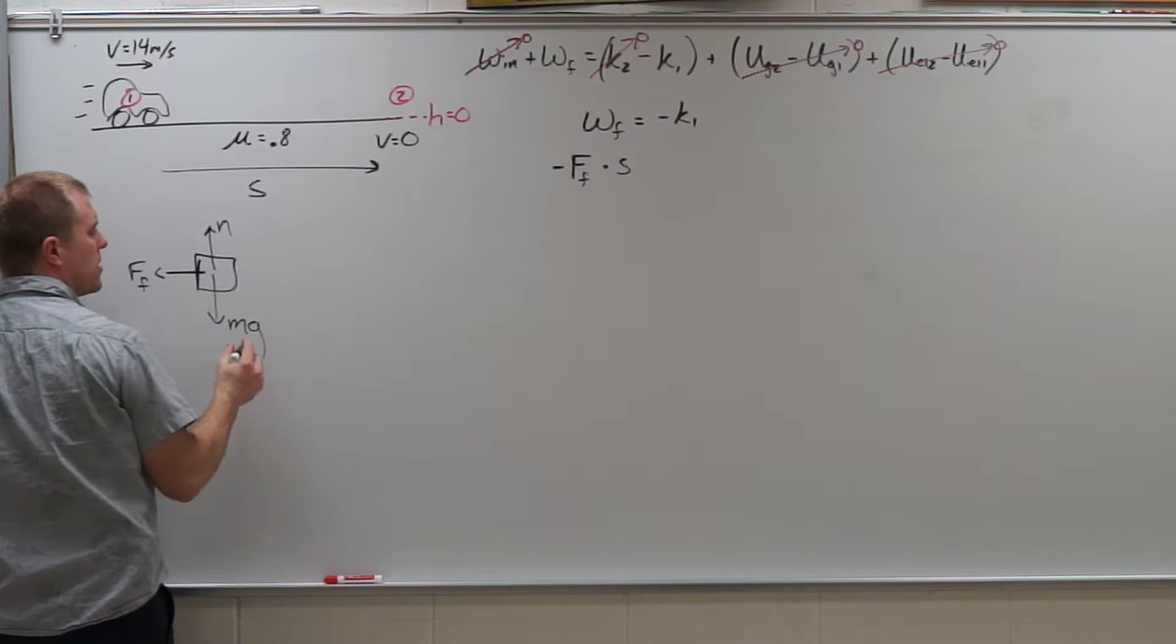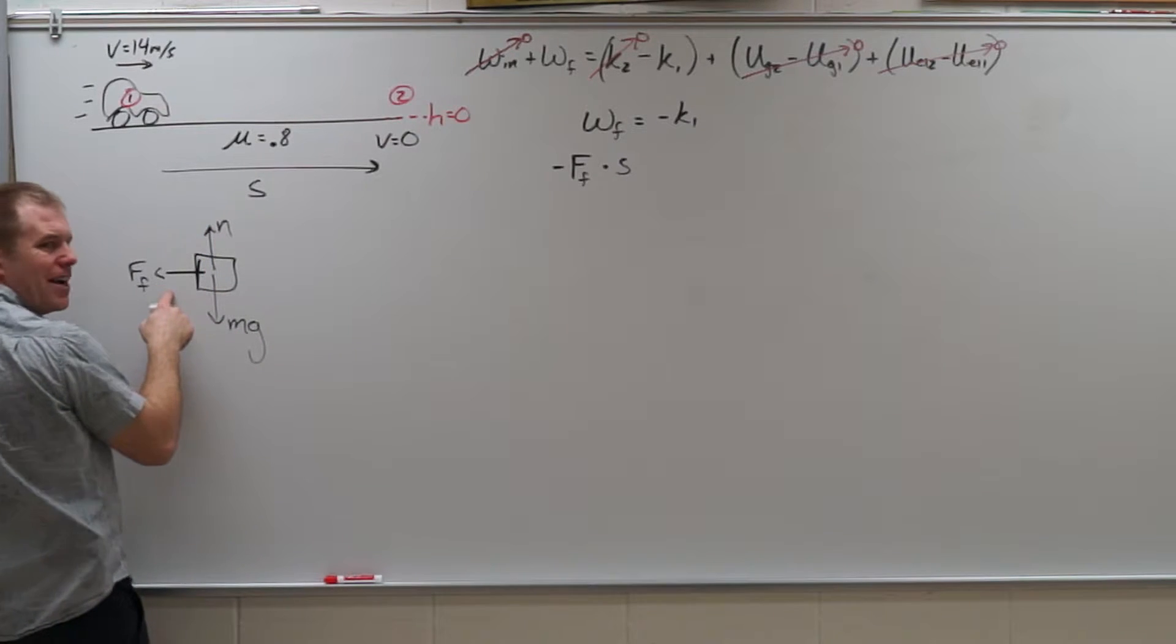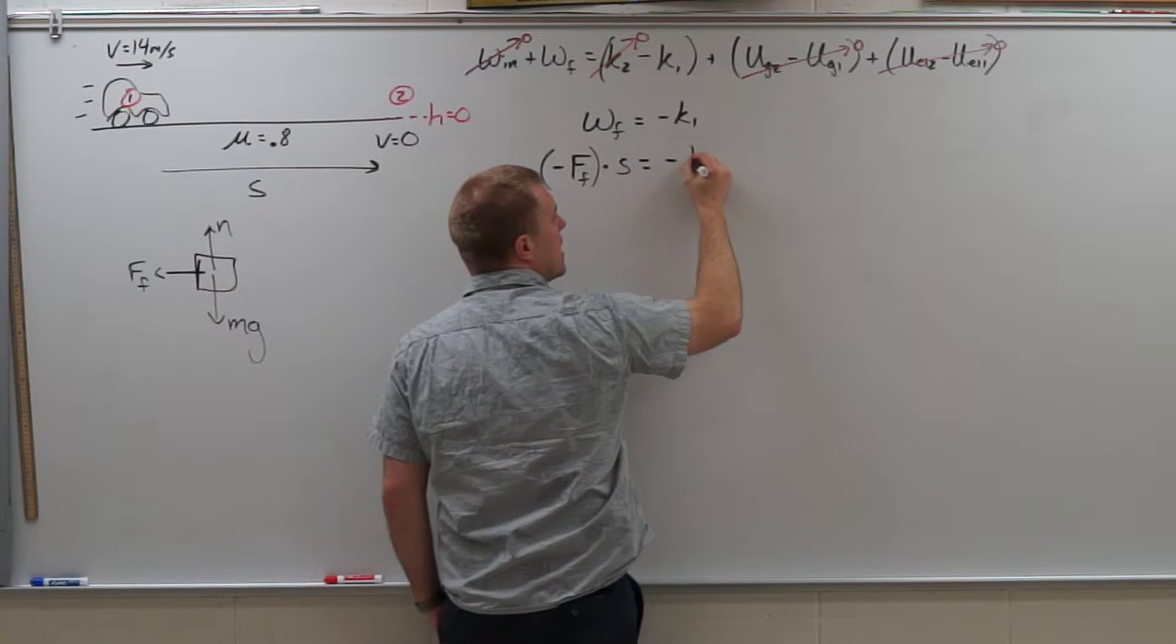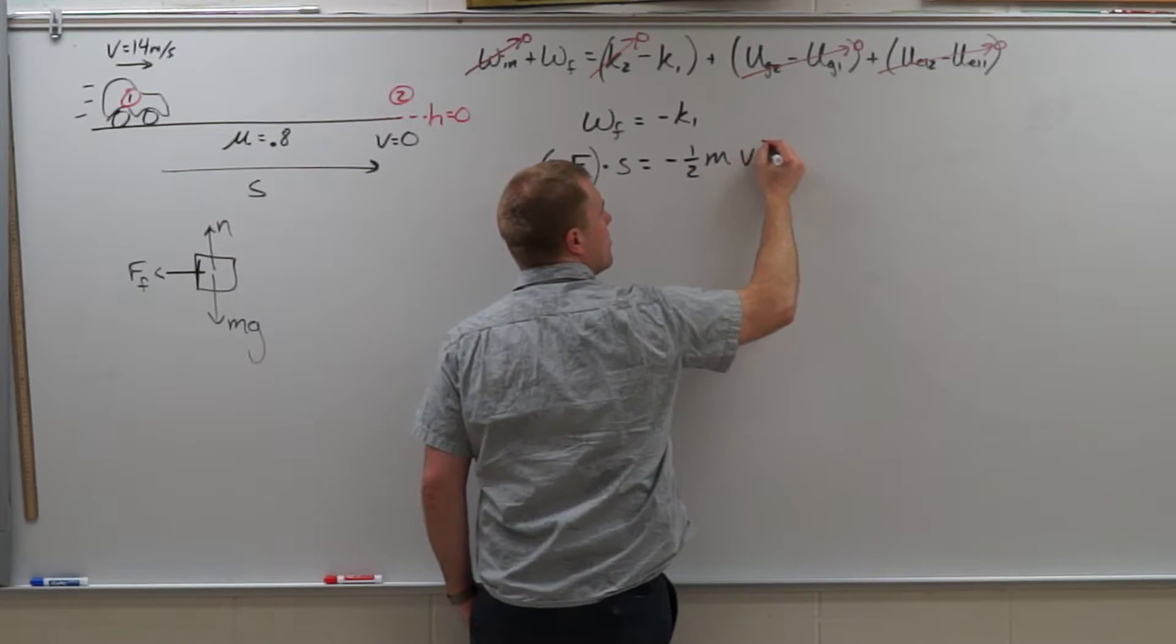Now remember these do have directions on them, so I do need to put a negative sign on that to indicate that on my car the force of friction is acting in this direction. Gravity is acting down, normal force is up. So this is my negative direction, so I do need a negative sign on that force of friction. Equals negative 1/2 mv squared.